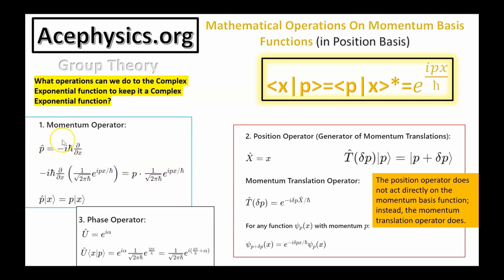This is a Hermitian operator, which means it has eigenvectors that span the space. These functions span the space, and it has real eigenvalues — the momentum values p are all real eigenvalues. Another operation we can do is the phase operator, e to the i alpha.